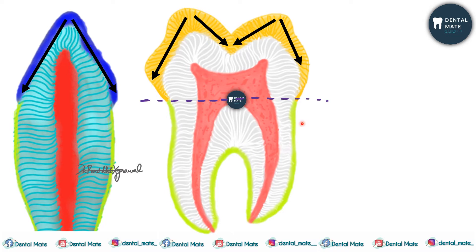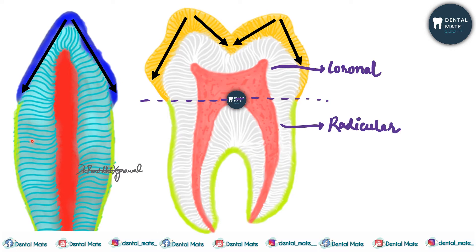Dentinogenesis will be covered in two parts: the formation of coronal dentine and the formation of radicular dentine separately. Coronal dentine is present in the crown of the tooth, and radicular dentine is present in the root portion of the tooth.